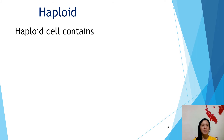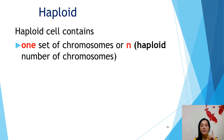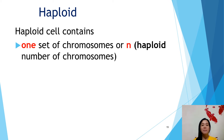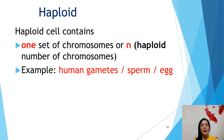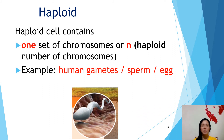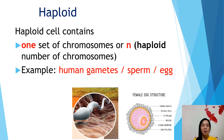Haploid cells contain one set of chromosomes, so it is different from diploid. Diploid — 'di' means two. Haploid — 'haploid' means only one set of chromosomes, or n. The examples are human gametes: the sperm or egg, which we also call ovum. Human gametes are haploid, meaning they only contain one set of chromosomes.